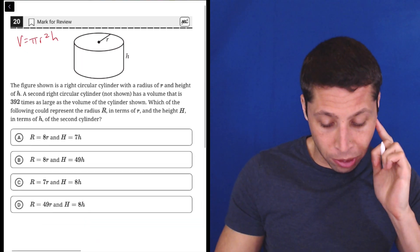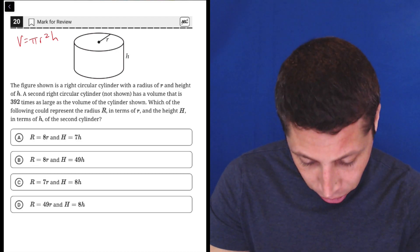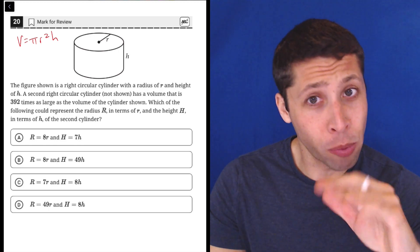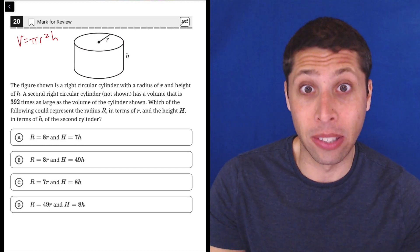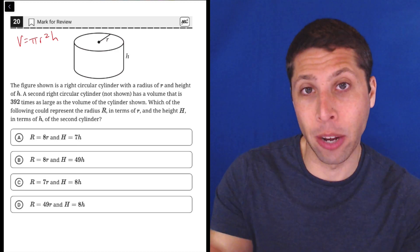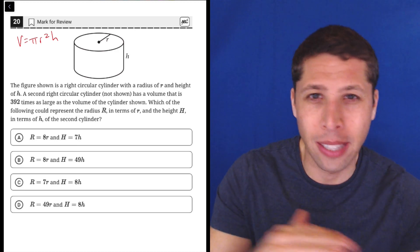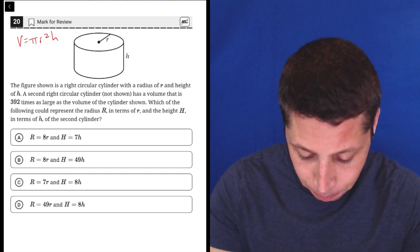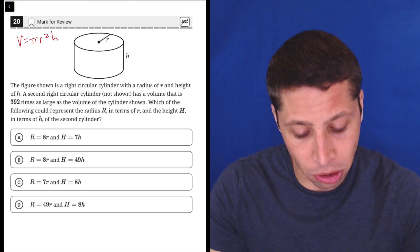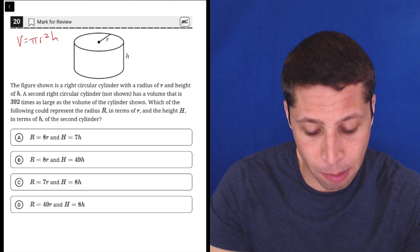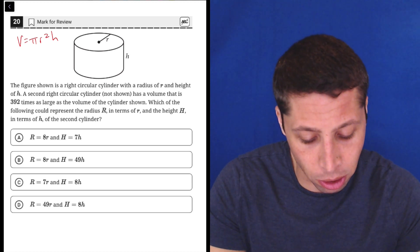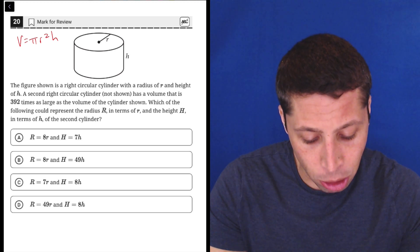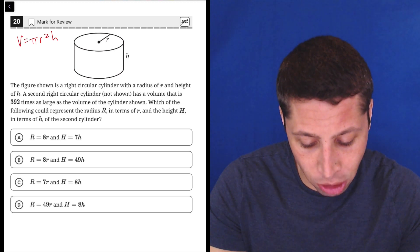Now let's look at the question, because there's a lot of instructions here. The figure shown is a right circular cylinder with a radius of r and a height of h. Right circular cylinder is just what you think of as a cylinder. It just means that the height and the radius form a right angle with each other. Don't let that bother you. A second right circular cylinder not shown has a volume that is 392 times as large as the volume of the cylinder shown. Which of the following could represent the radius R in terms of r and the height H in terms of h of the second cylinder?